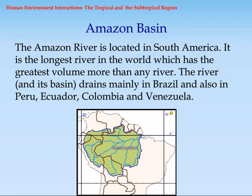Amazon Basin. The Amazon River is located in South America. It is the longest river in the world, which has the greatest volume more than any river. The river and its basin drains mainly in Brazil and also in Peru.